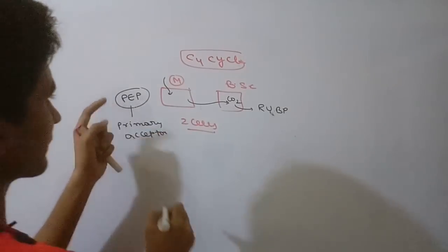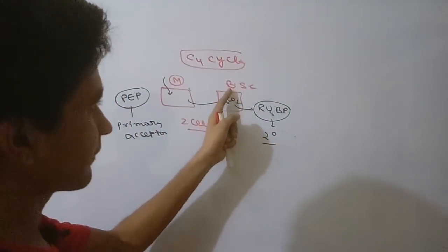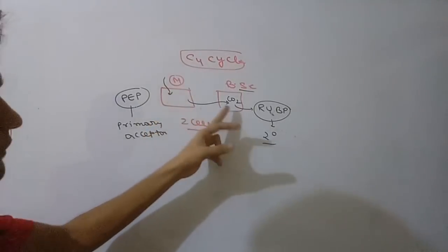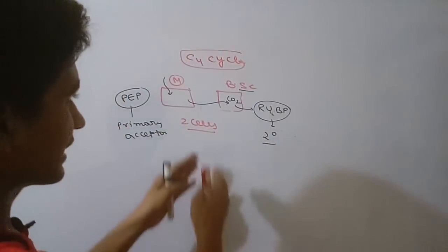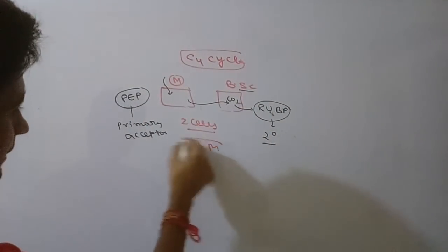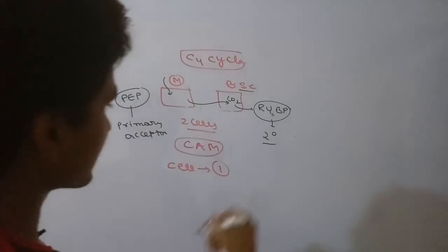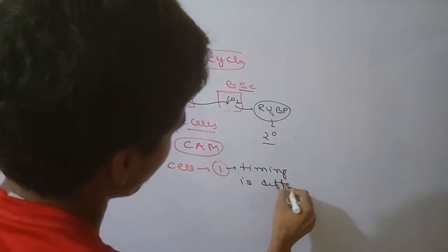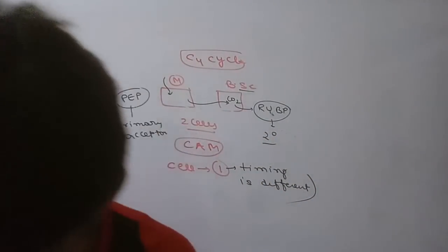In C4 cycle, bundle sheath cells are responsible for CO2 fixation. The two cells are responsible for CO2 fixation. But in CAM plants, we have the same cell but the timing for CO2 fixation is different. You have to understand that in CAM plants timing is different.